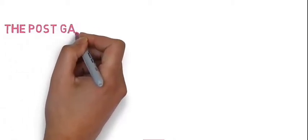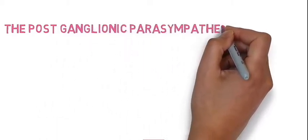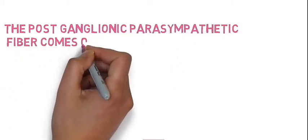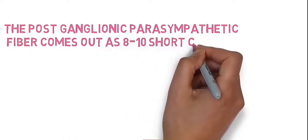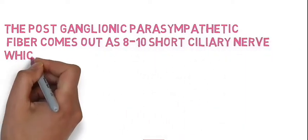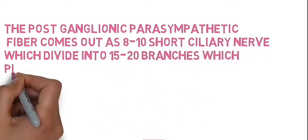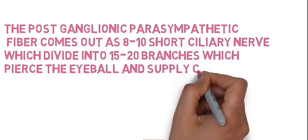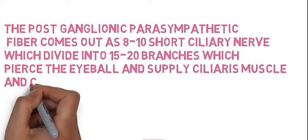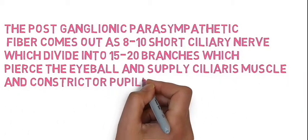The postganglionic parasympathetic fibers come out as 8 to 10 short ciliary nerves, which divide into 15 to 20 branches. These pierce the eyeball and supply the ciliary muscle and sphincter pupillae. In the diagram, I only show 2 short ciliary nerves.